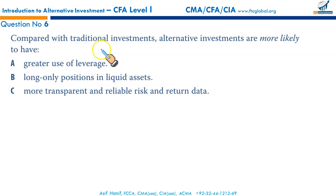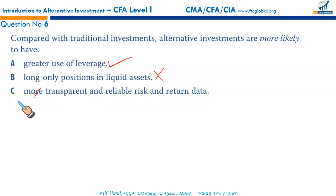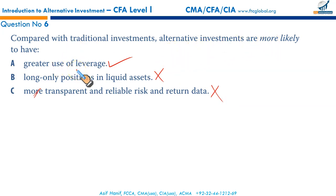Question six. Compared with traditional investments, alternative investments are more likely to have greater use of leverage — this is true, yes. Long-only positions in liquid assets — not necessary, as they take short positions as well, so this is not true. More transparent and reliable risk and return data — wrong; in fact, they are less transparent and have less reliable risk and return data. The most likely situation is A: alternative investments are more likely to have greater use of leverage. That makes A the correct option.